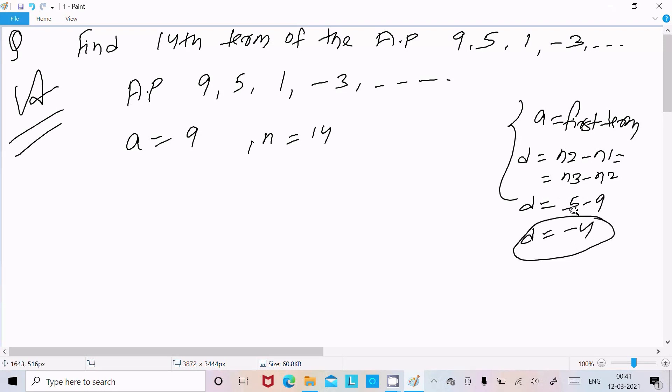So d is -4. Now we know that the nth term formula is a + (n-1) × d. The value of a is 9, n is 14, and d is -4.